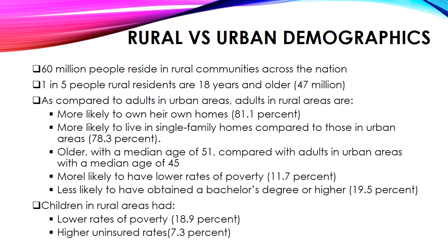As it relates to children, while children in rural areas have lower rates of poverty compared to urban areas — 18.9% versus 22.3% — a greater percentage of children in rural areas are more likely to be uninsured: 7.3% compared to 6.3% for children in urban areas. This data helps illustrate the differences between rural and urban communities, and underscores the need to understand the assets and limitations of each as they adapt to meet the growing needs of their diverse populations.